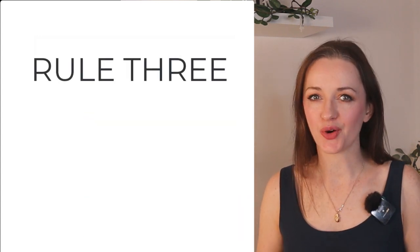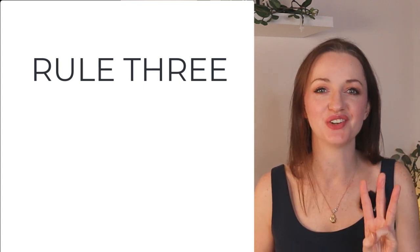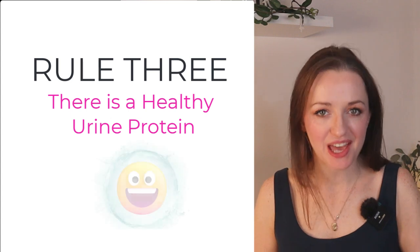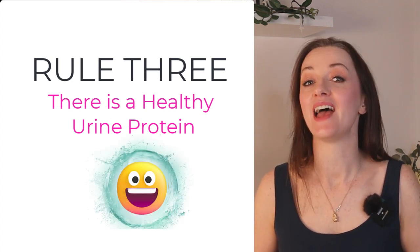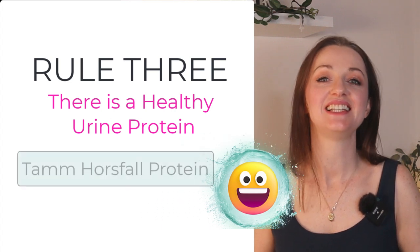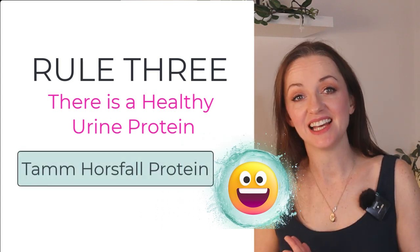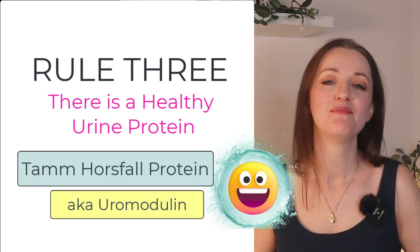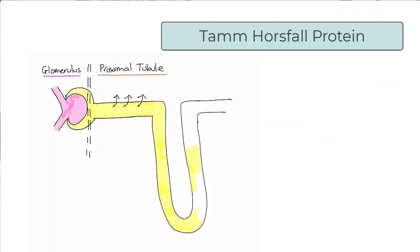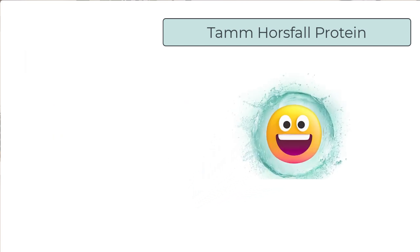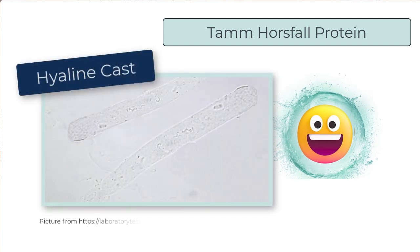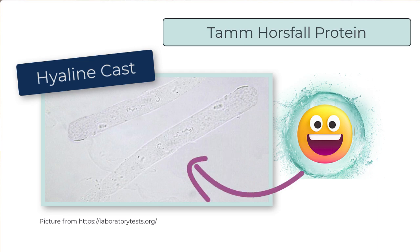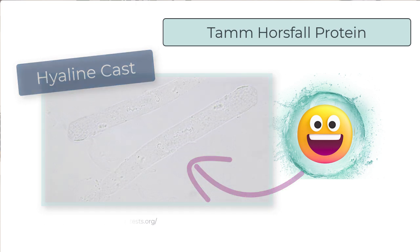The third and final rule is that there is a healthy urine protein that we expect to find in the urine. This is known as Tamm-Horsfall protein, or Uromodulin — let's call him Tam. Tam is generated in the loop of Henle. You've likely come across Tam already: hyaline casts on a urine microscopy report are just Tam — dehydrated Tam, a bit parched, but still just Tam.